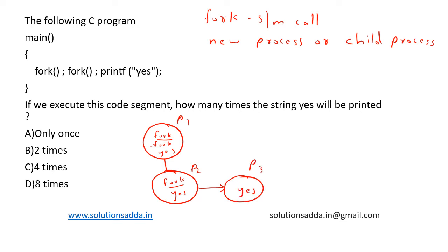So when we print this yes, one time it is executed. Now this goes back and we print yes here, so one more time it is executed. Now we go back, this fork gets executed.